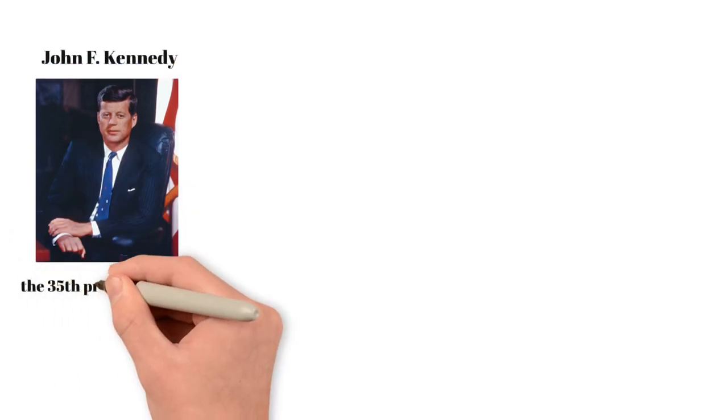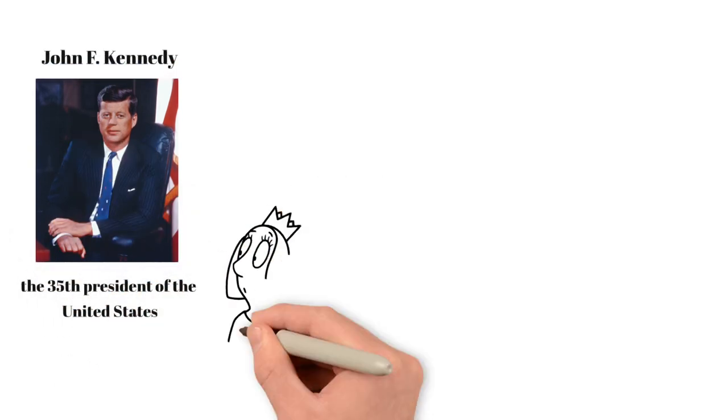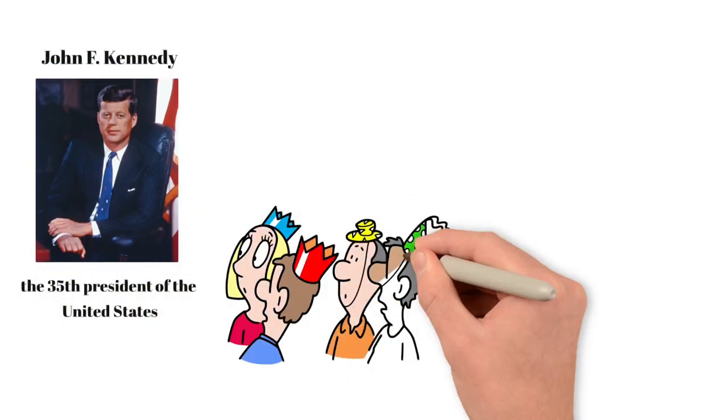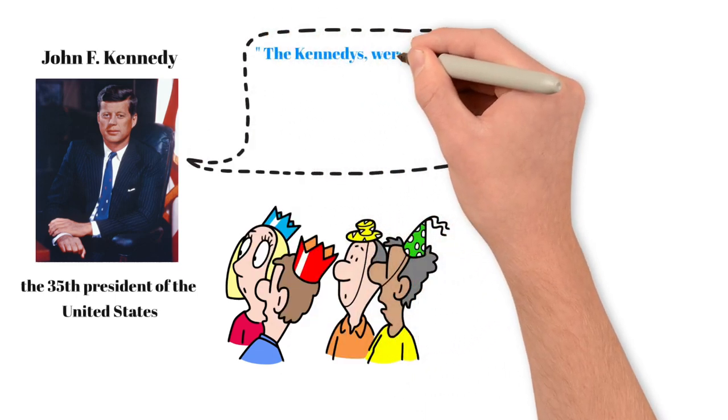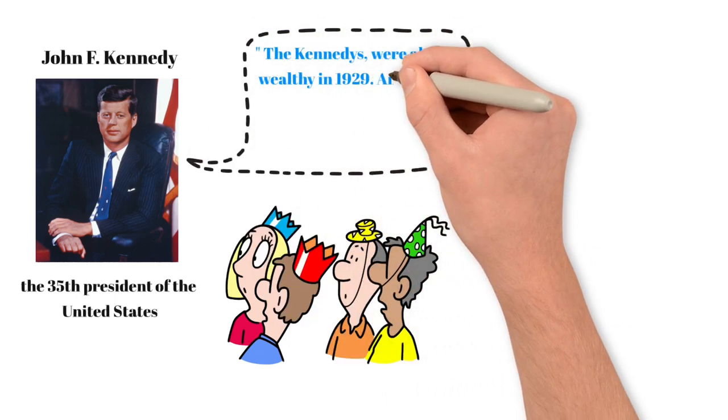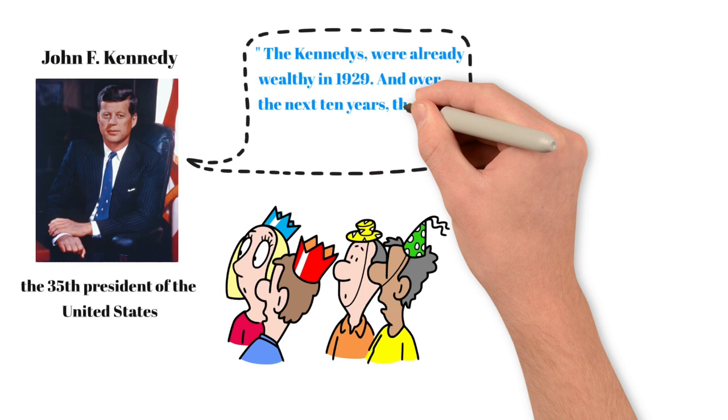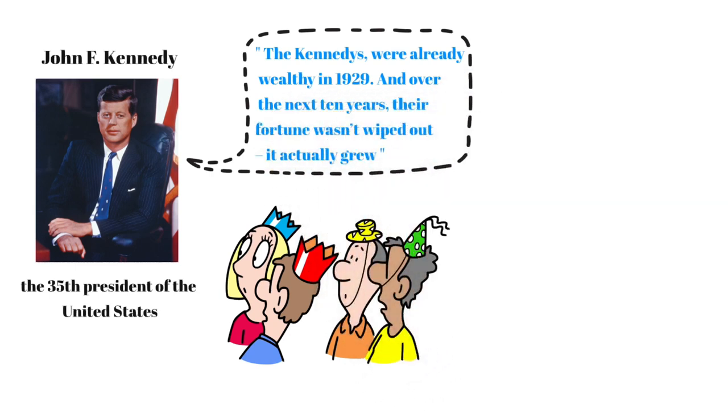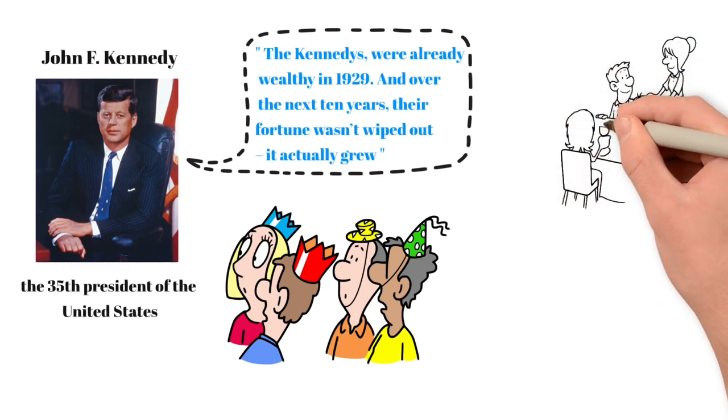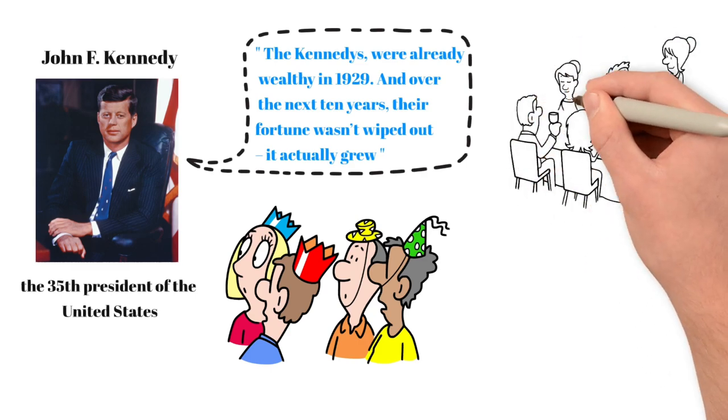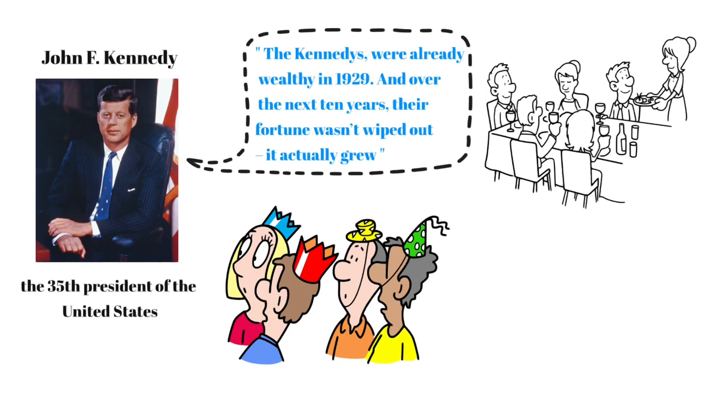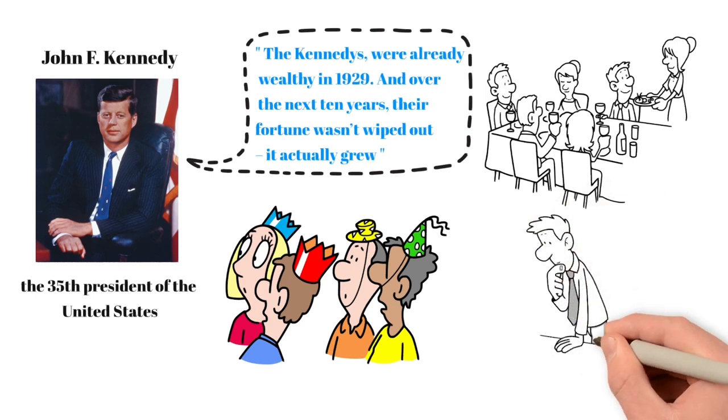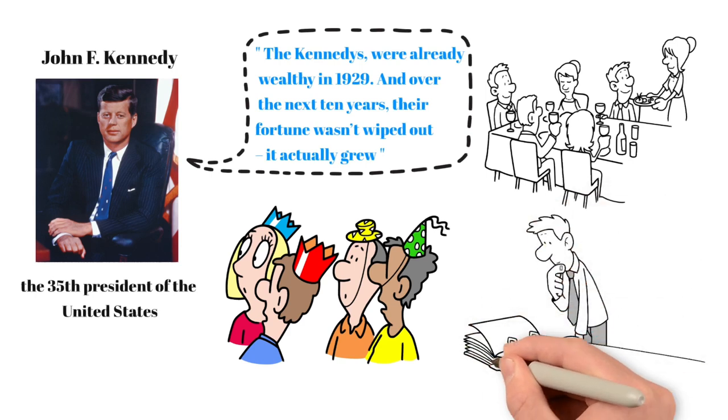When John F. Kennedy ran for president in 1960, he was asked about his experience of the Great Depression. His answer surprised many voters. The Kennedys, he said, were already wealthy in 1929. And over the next 10 years, their fortune wasn't wiped out. It actually grew. By 1939, the family had more servants and lived in a bigger house than at the start of the decade. It was only when he went to Harvard and read about the Depression that he realized how badly many of his fellow citizens had suffered.